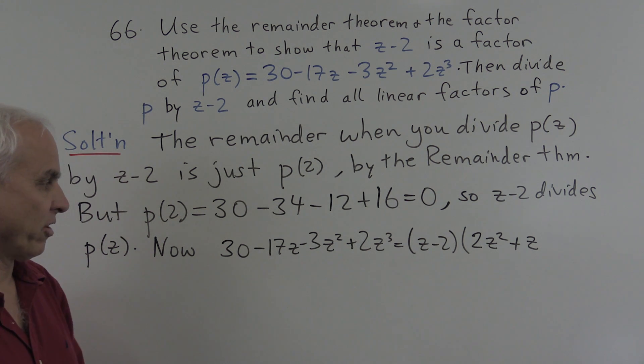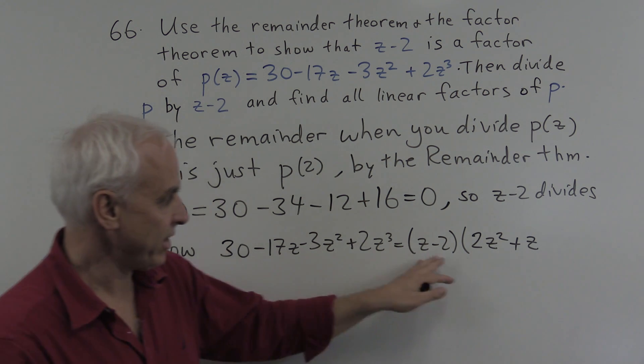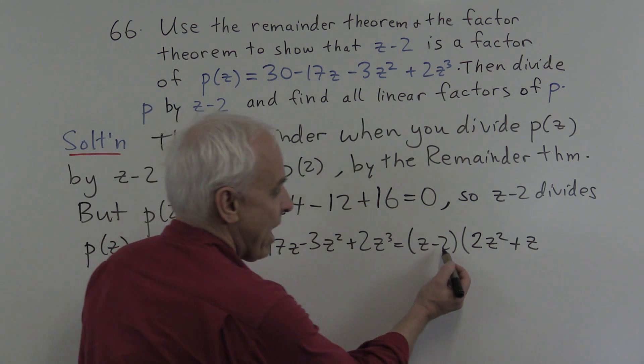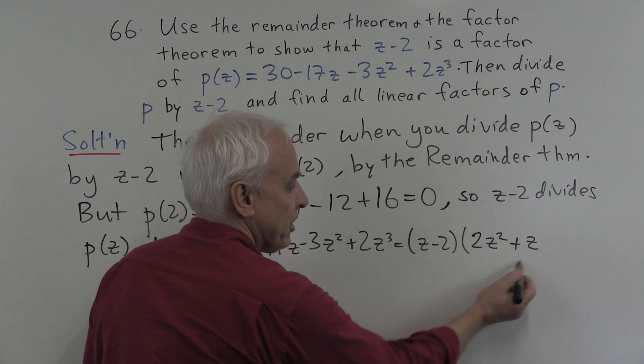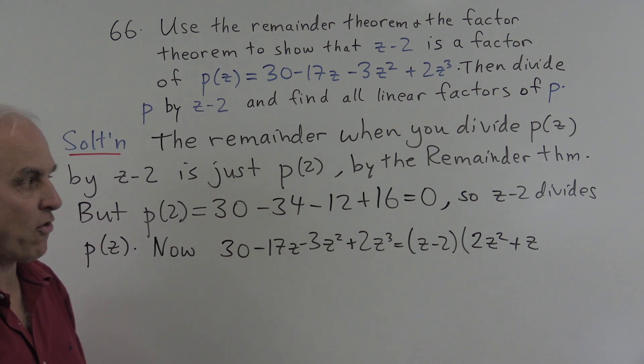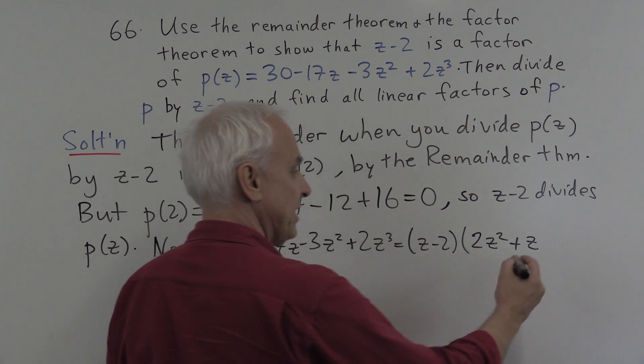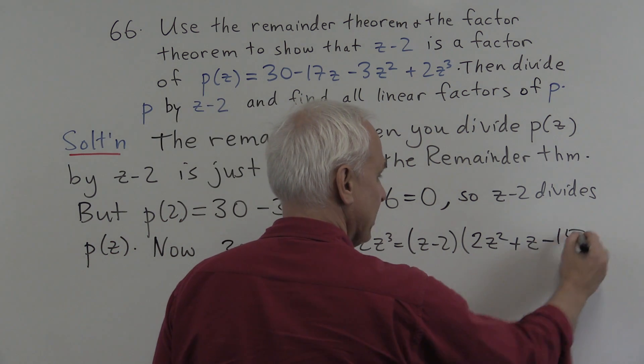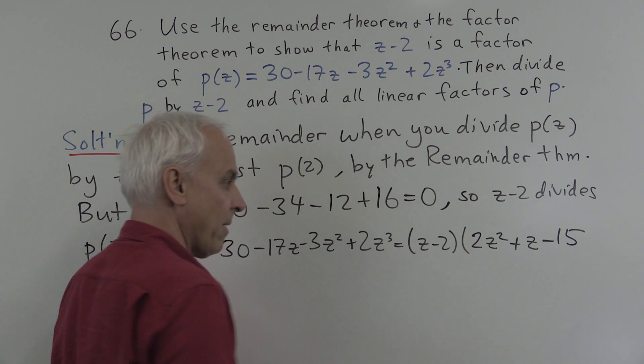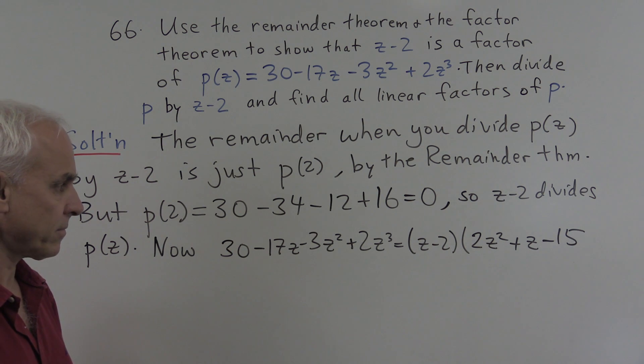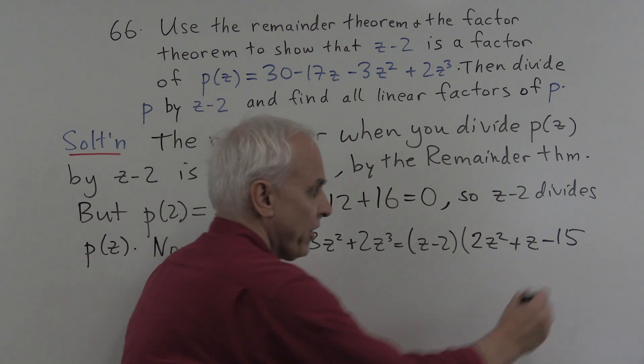And now the linear term. We need to have minus 17z. How many do we have on the right-hand side so far? Well, we have minus 2z. That's the only linear expression in z so far. So we need to add another minus 15 of them. If we put a minus 15 there, and then the minus 15 times the z will give us another minus 15z for a total of minus 17. That's the end of the polynomial.